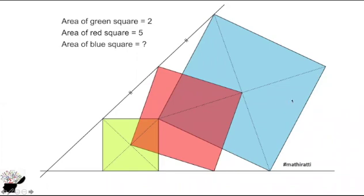So let's go through the solution. We know the area of the green square is given as 2. The area of a square is the length times the length. So if the area is 2, the length will be √2, because √2 times √2 equals 2. The same applies to the red square. The length is √5 times √5, which gives you the area of 5.